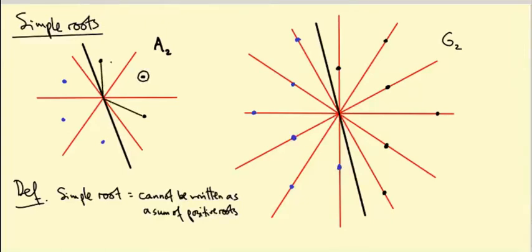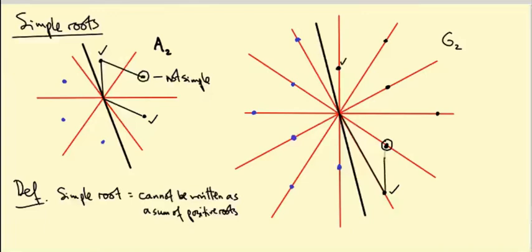this vector plus this vector, as you can see by the parallelogram rule — if you go up here and then down here you get to this root. So this one is not simple, but these two are simple. In the G2 root system, this one at the top turns out to be simple, this one at the bottom turns out to be simple, and the others are not simple. To get to this one, you go down to this root and then up — and up is a simple root. You can go up again and get the next one, and up again for the next. None of these are simple; they're all sums of positive roots. So there are precisely two simple roots in this diagram as well.